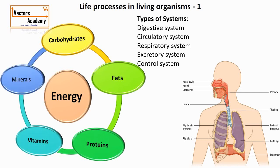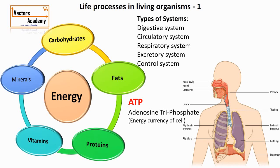But these carbohydrates cannot be directly utilized by the organs. They have to be converted into a specific unit called ATP, that is adenosine triphosphate. These are also called the energy currency of the cell. The carbohydrates are converted into ATP, and ATP is the energy molecule used by the organs to perform their tasks. The process of conversion of carbohydrates into ATP is called cellular respiration.